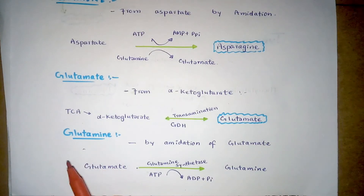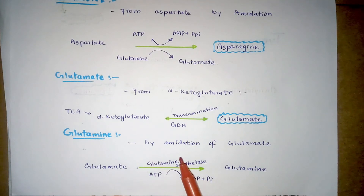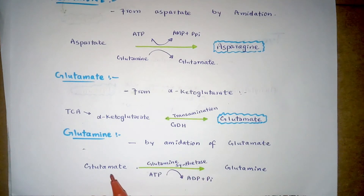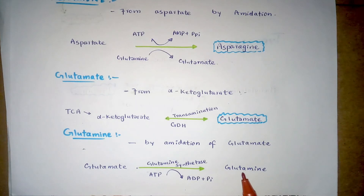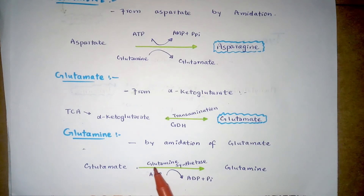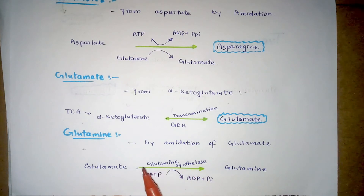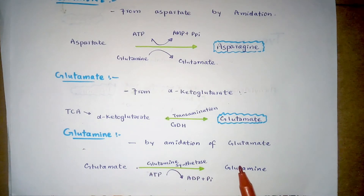Glutamine is produced by the amidation of glutamate. The glutamate is converted to glutamine. The enzyme that catalyzes this reaction is glutamine synthetase, which acts on glutamate to form glutamine.